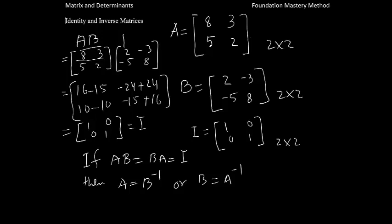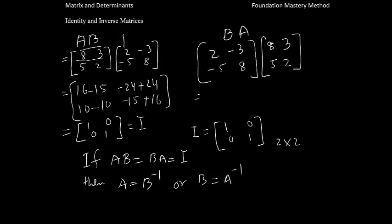Now I need to check the other way. So we have now B first, 2, negative 3, negative 5, 8. And A is 8, 3, 5, 2. So first row goes with first column, 2 times 8 is 16. And then negative 3 times 5 gives me negative 15. And then 2 times 3 is 6. Negative 3 times 2 is negative 6.